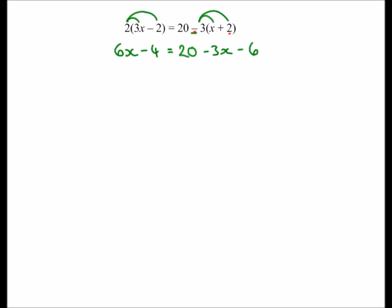Now I'm going to carry on like before. I want x's on one side, so to get rid of the minus 3x on the right-hand side I'm going to add 3x to both sides: 6x plus 3x is 9x, minus 4 equals — tidying up that side — 14. Now to get 9x on its own I add 4 to both sides: 9x equals 18. Then I divide by 9 to get x equals 2.